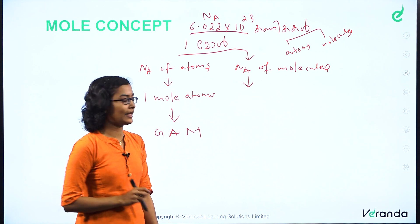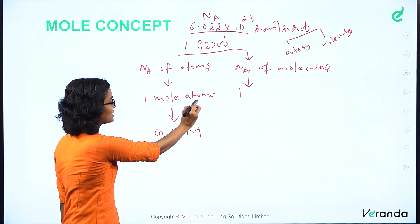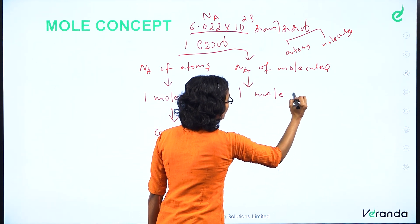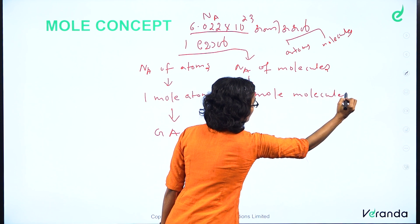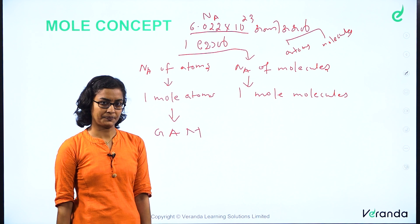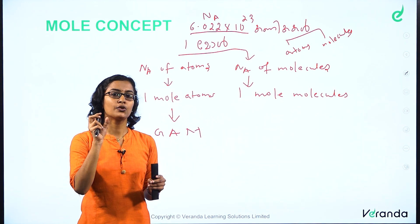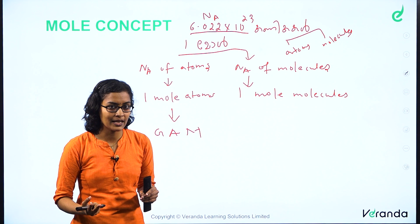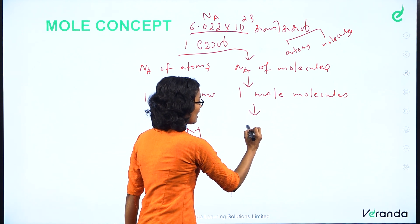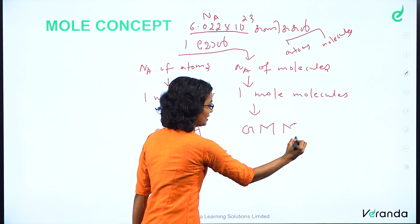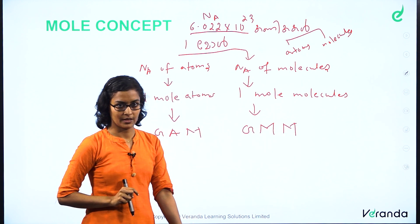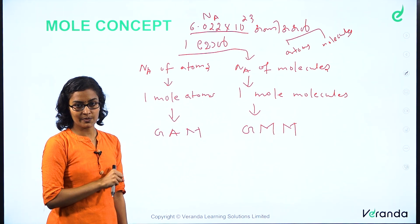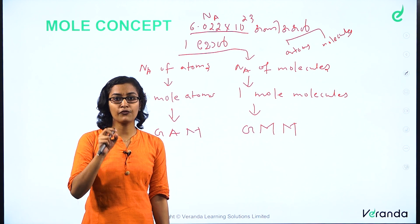It is 1 mole — 1 mole, a mole. I will give 1 mole of atoms. Avogadro's number of molecules is 1 mole of molecules. 1 mole of molecules — I will express this in grams, which means gram molecular mass.